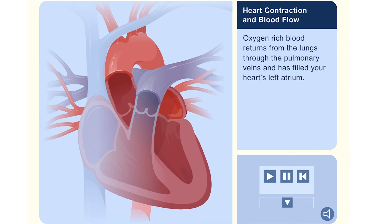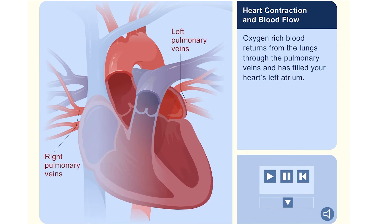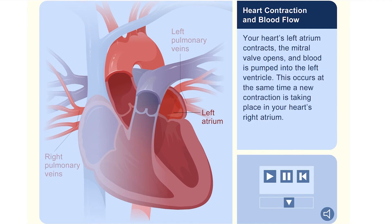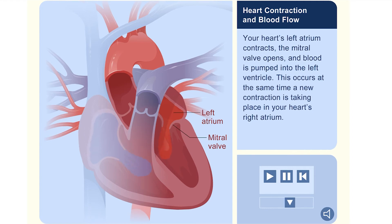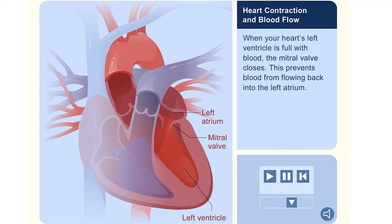Oxygen-rich blood returns from the lungs through the pulmonary veins and has filled your heart's left atrium. Your heart's left atrium contracts. The mitral valve opens and blood is pumped into the left ventricle. This occurs at the same time a new contraction is taking place in your heart's right atrium. When your heart's left ventricle is full with blood, the mitral valve closes. This prevents blood from flowing back into the left atrium.